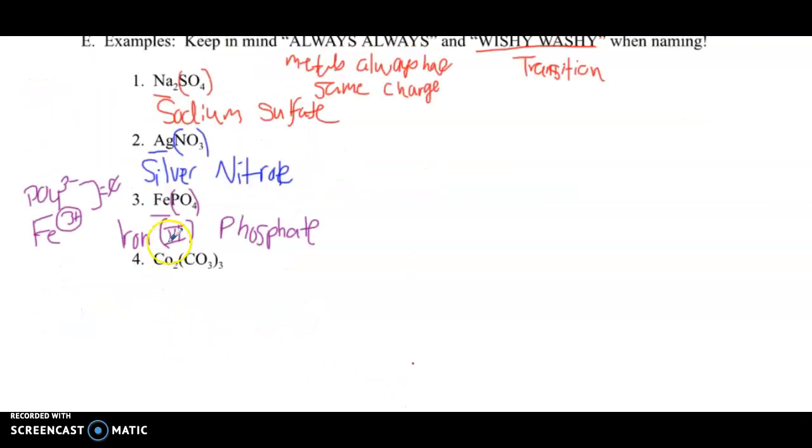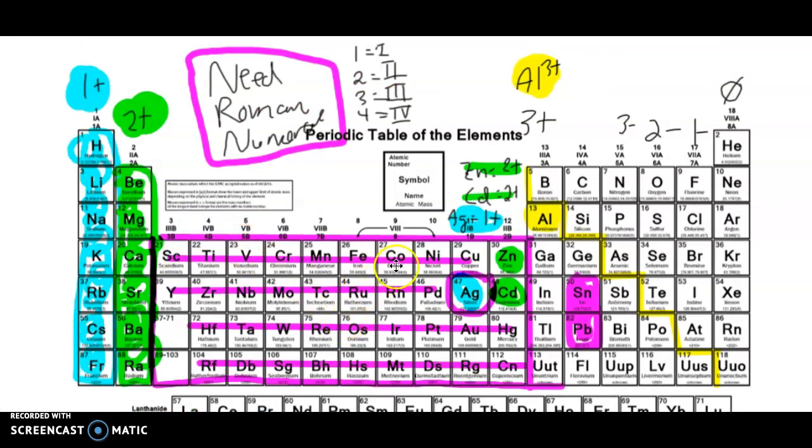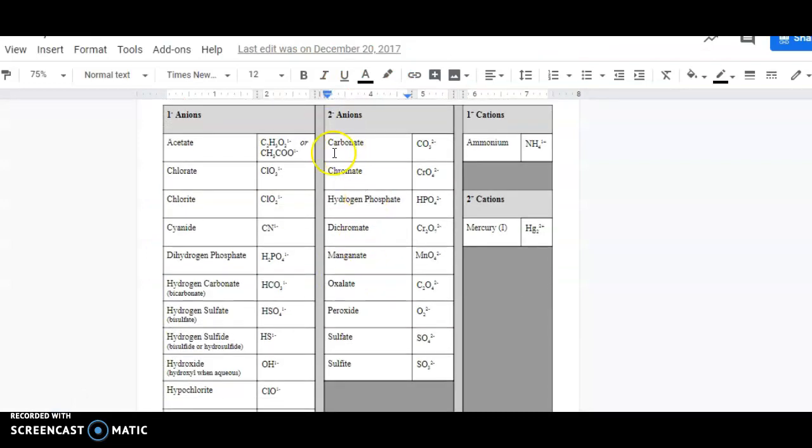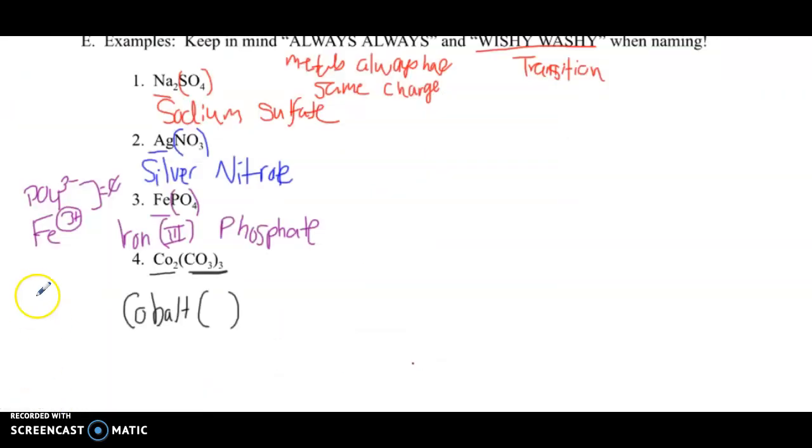We got one more to try here on this page. CO is cobalt. I'm not sure if that one needs a Roman numeral or not, so let's go to our periodic table and find cobalt. Cobalt is right here—yep, transition metal. It's not one of my always, always. It's a wishy-washy one, so we've got to figure out what the charge on cobalt is. We've got a polyatomic ion here. Go to your polyatomic ion cheat sheet, and CO3 2- is carbonate. We need to keep in mind that carbonate's charge is 2-. This is cobalt something carbonate.